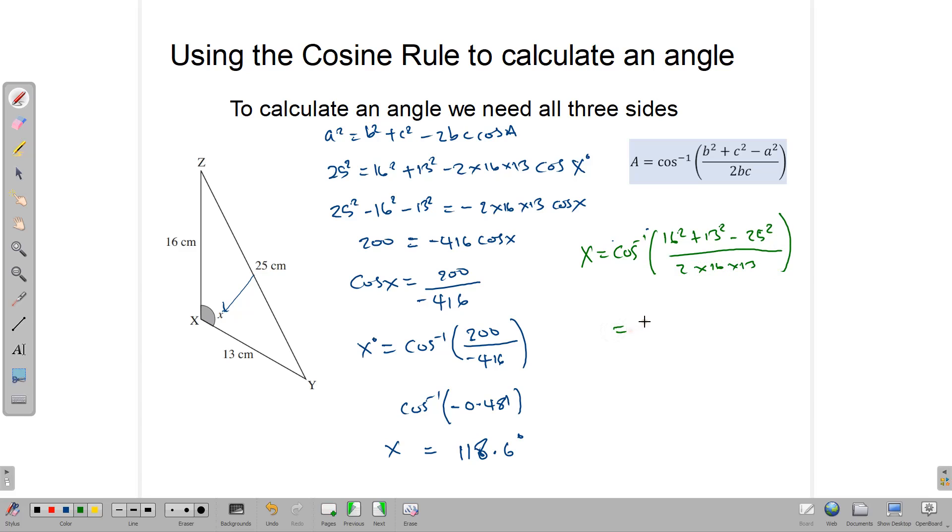Working it like this, we get the cos inverse of negative 200 over 416, which leads us right back to here. Once we punch that into our calculator, remember your calculator needs to be in degree mode, then we end up with 118.6 degrees.